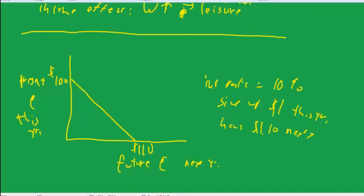So if you were to consume absolutely zero this year and save it all, then you could go for a hundred and ten next year. Conversely, if you consume everything this year, then you have nothing left over for next year.